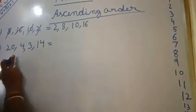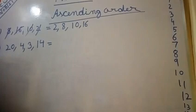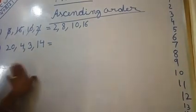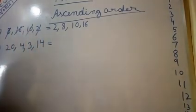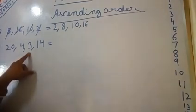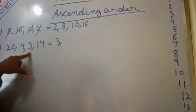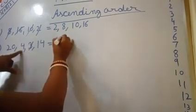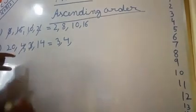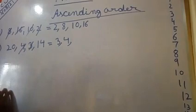See the next example: 20, 4, 3, 14. We have to arrange these in ascending order — smaller number to bigger number. You count from 1: which number comes first? 1, 2, 3 — 3 comes first, so 3 is the smallest. Write 3, then cut it. After 3 comes 4. Write 4 and cut it. Remember: you must cut the number, otherwise you will be confused.